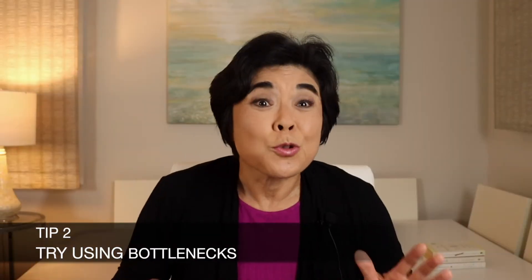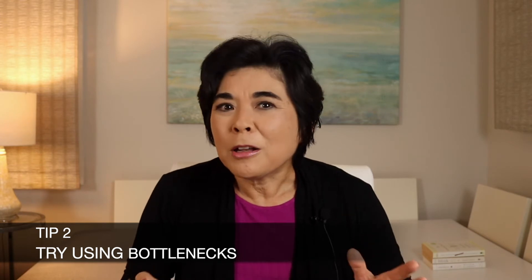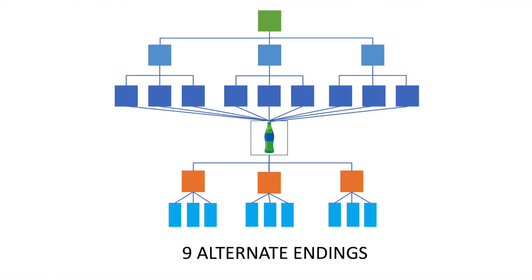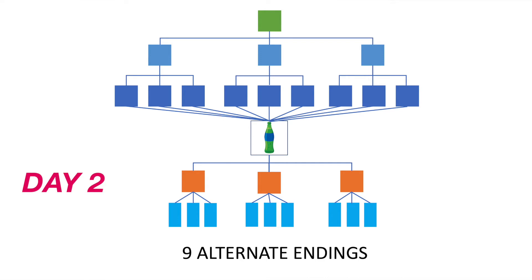Tip number two: try using bottlenecks. A bottleneck is an event that happens no matter what choices the player made before. This type of structure makes branching much more manageable. For instance, you might have the story take place over several days. The player makes three decisions on day one, and when that day is over — no matter what they chose — they always come to a scene called day two, where they make three more decisions. Using a bottleneck reduced the number of alternate endings from 27 to 9.